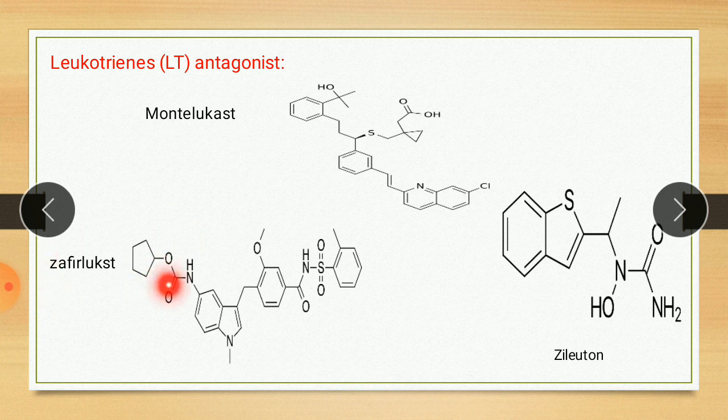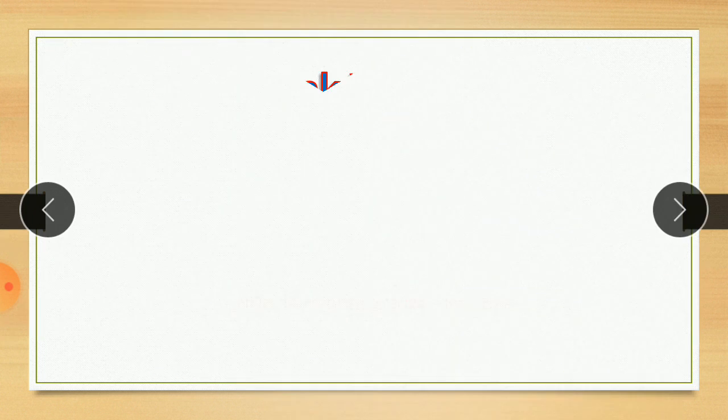Second is zafirlukast, FDA-approved for prevention and treatment of asthma, though less effective than inhaled glucocorticoids or beta-agonists. Third and last is zileuton, an orally active inhibitor of 5-lipoxygenase enzyme formation, used for maintenance and treatment of asthma. So these are the leukotriene antagonists, and that concludes the topics of prostaglandin analogs and leukotriene antagonists for this autocoids chapter.